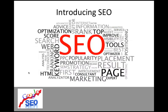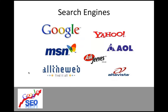SEO involves phrases like keywords, optimisation, optimisers, and pay per click comes under that. With SEO, we're optimising for search engines. People search using search engines, but I don't think many people use anything other than Google — they particularly use Google.